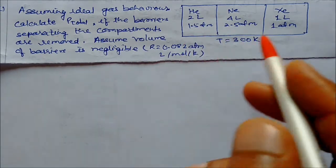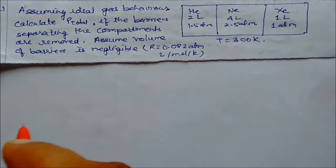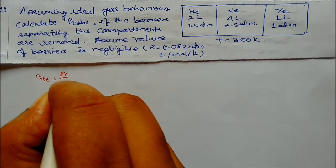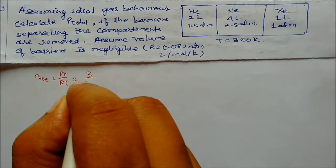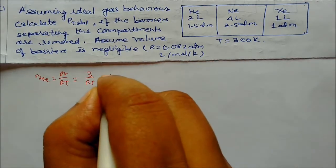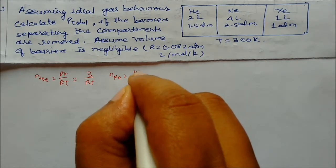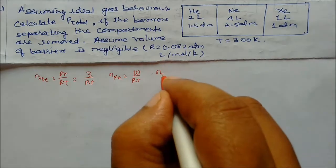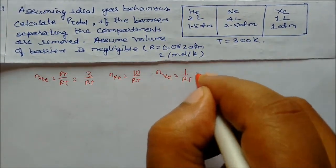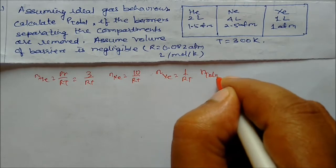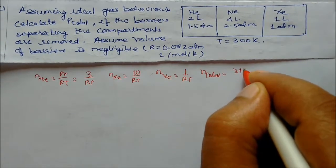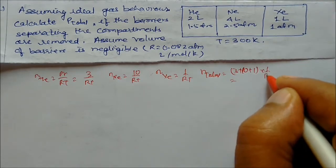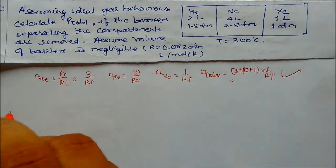First, find the moles of each gas using n = PV/RT. Moles of helium = 3/RT (P×V = 3), moles of neon = 10/RT, and moles of xenon = 1/RT. So total moles = (3 + 10 + 1)/RT = 14/RT.